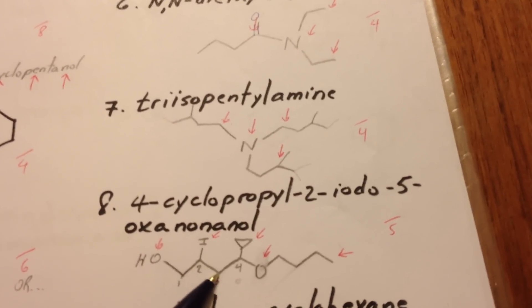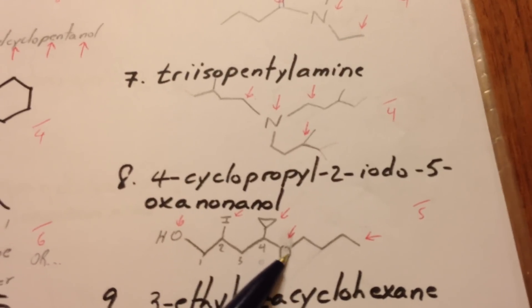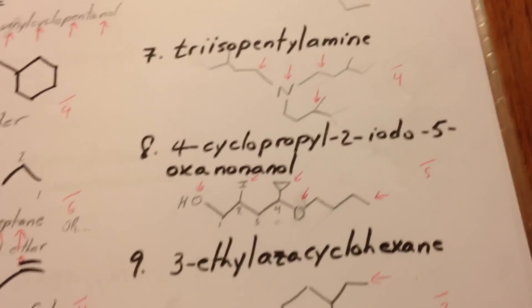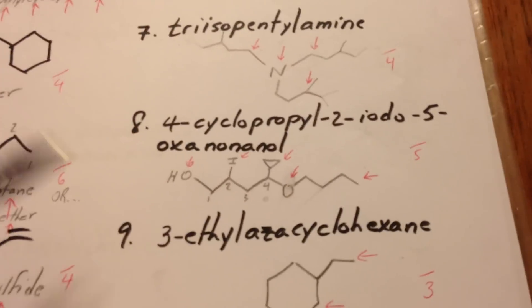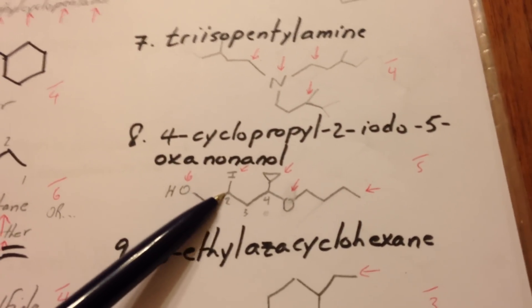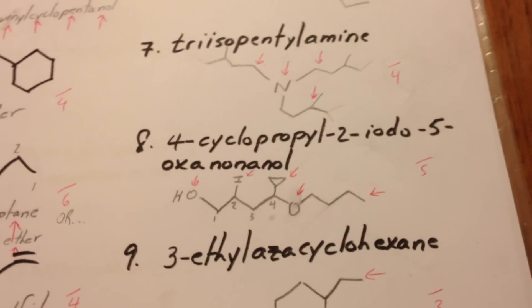one, two, three, four, five, six, seven, eight, nine. Notice how I count the oxygen as though it were a carbon atom. So the iodo is at the second position. Cyclopropyl at the fourth position. And there's the ether oxygen.